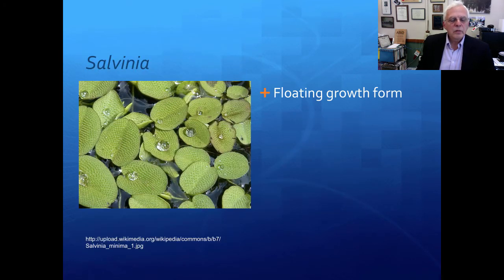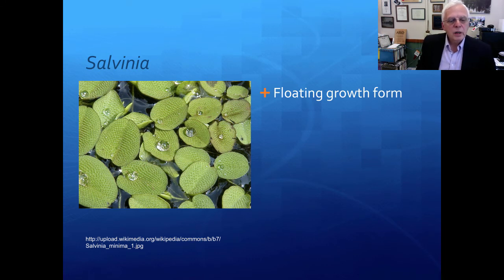Here's Salvinia. This is a floating growth form. It has hair-like structures that stick up on the surface, and you see beads of water standing up on the surface of the leaves. This is caused by the physical structure of the leaf — Salvinia, another floating fern.